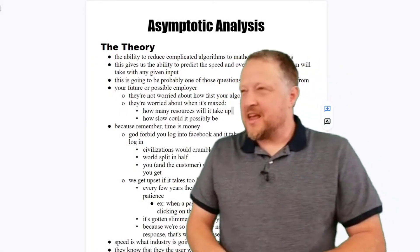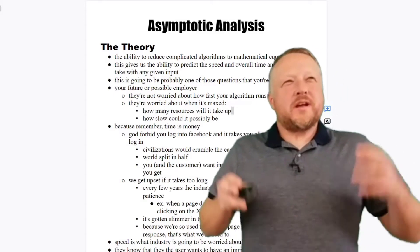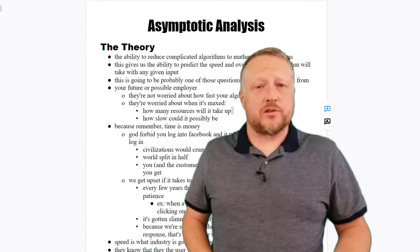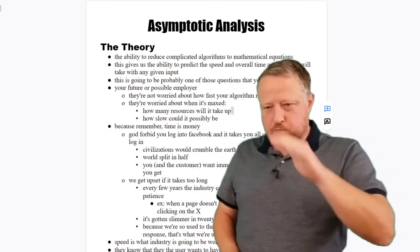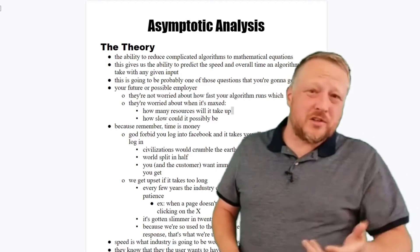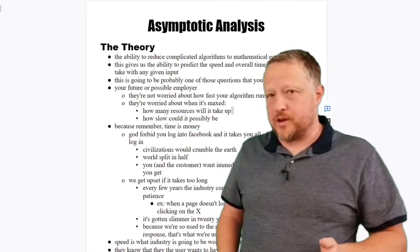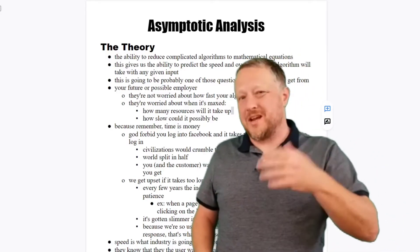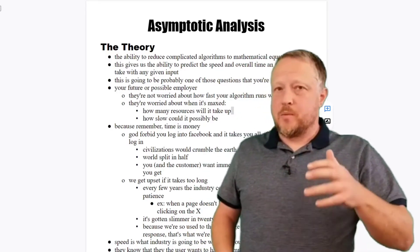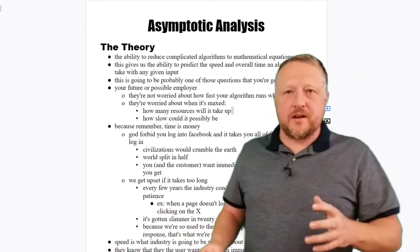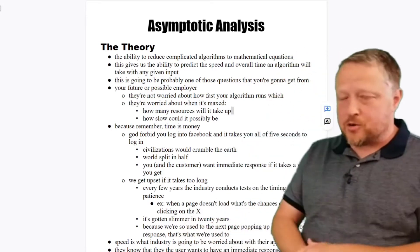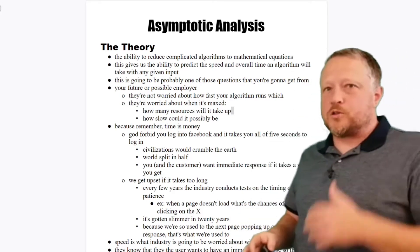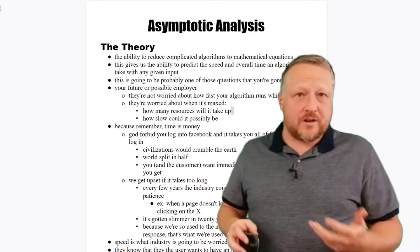Asymptotic analysis. We can convert all of our functions into equations. This is a several-step process, but first we're going to talk about the overall theory of how that works out, and then we're going to translate our code into those equations. The overall theory is to reduce our complicated functions into a mathematical equation, and that gives us the ability to predict the overall time an algorithm will take with any given input.